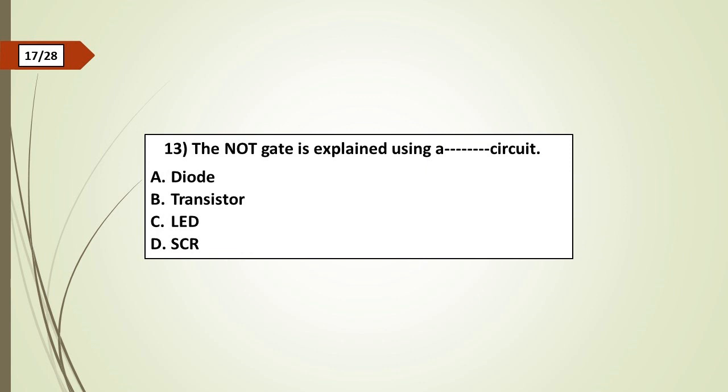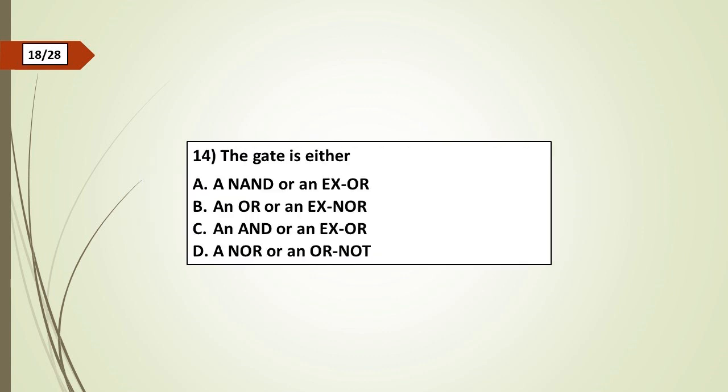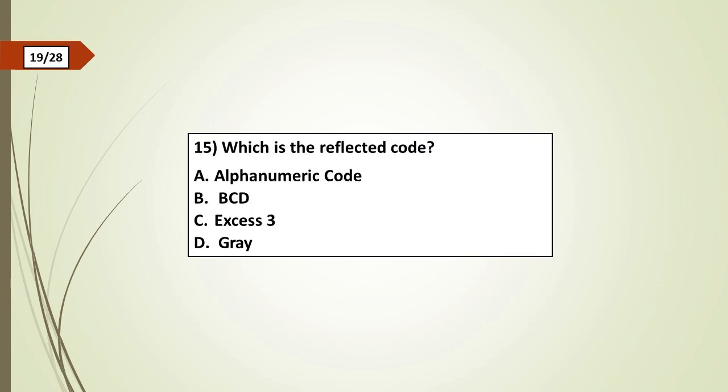Thirteenth question: The NOR gate is explained using a dash circuit: a) diode, b) transistor, c) LED, d) SCR. Fourteenth question: The gate is either: a) an AND or an XOR, b) an OR or an XNOR, c) an AND or an XNOR, d) an OR or NOT.